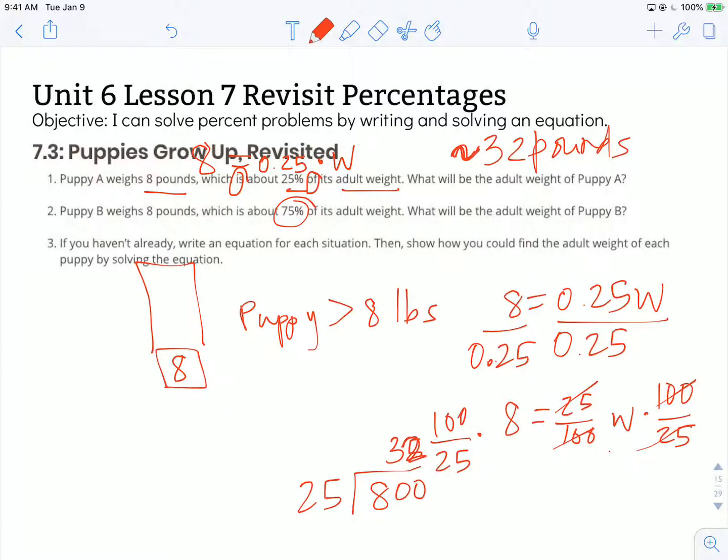So it's not going to grow much more in its weight. So puppy B's weight is going to be not too much more than 8 pounds. So the weight of puppy B must be less than the adult weight of puppy A, even though right now they weigh exactly the same. Because puppy B is almost to its full weight. It's 75% compared to 25%.